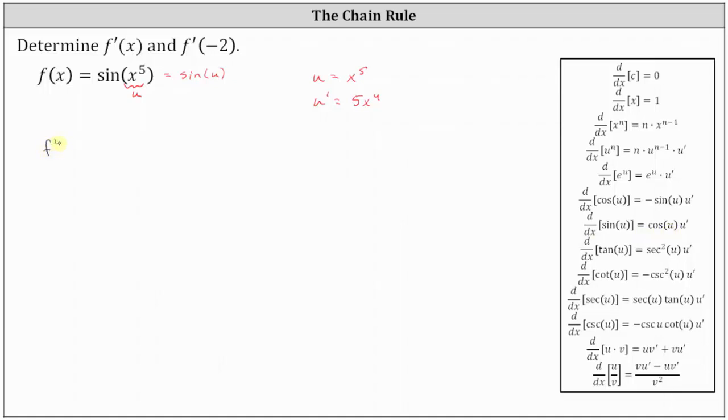which indicates that f'(x) is equal to cos(u), which is cos(x^5), times u', which is 5x^4.